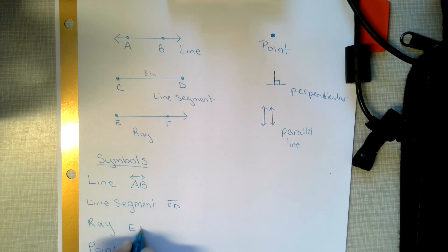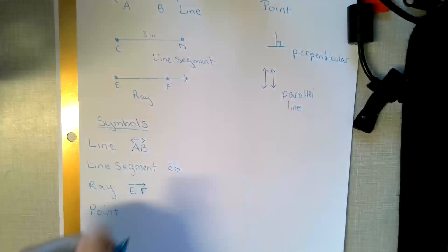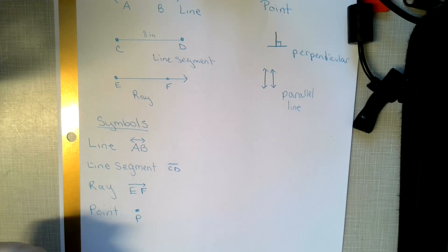A ray. So if we have EF and we put what the ray looks like. Move my camera down a little bit. Point. It would be like point P or whatever I call it.